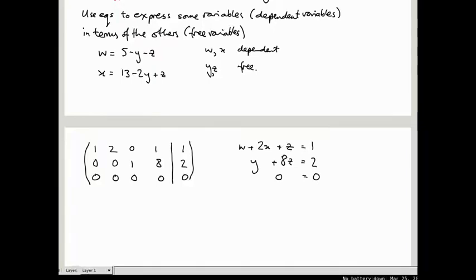What are the dependent variables? Well, the leading entries are this one and this one which are the coefficients of W and Y. So W and Y are going to be our dependent variables and as I said, you can see W only appears in the top equation, Y only appears in the second equation.